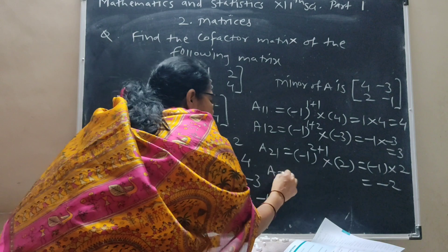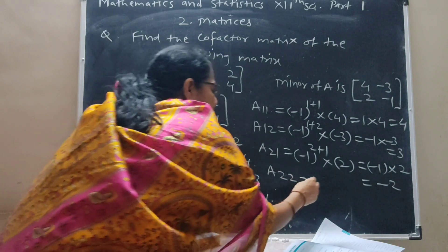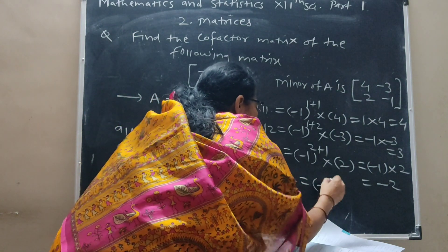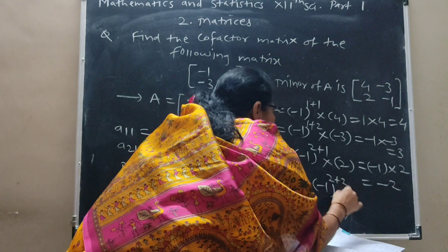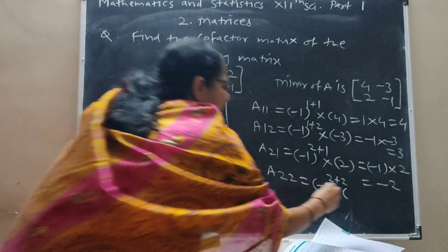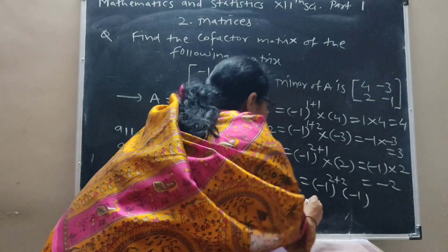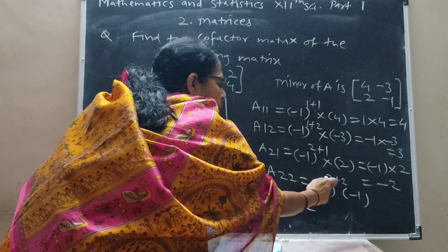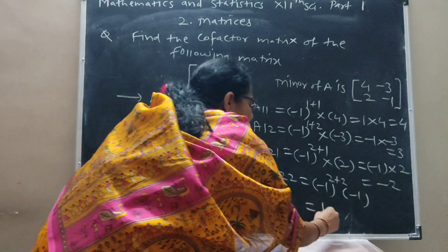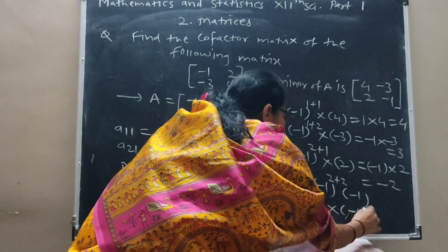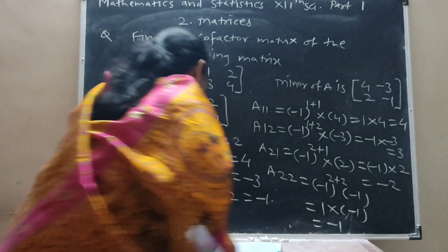A22 equals minus 1 raised to 2 plus 2 times the respective minor minus 1. Minus 1 with even power gives 1 times minus 1, finally this is minus 1.